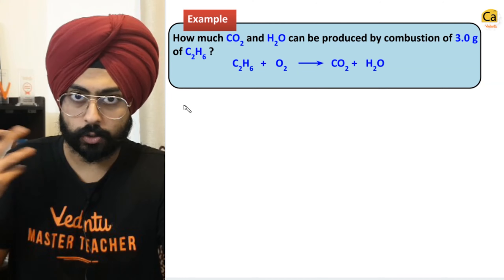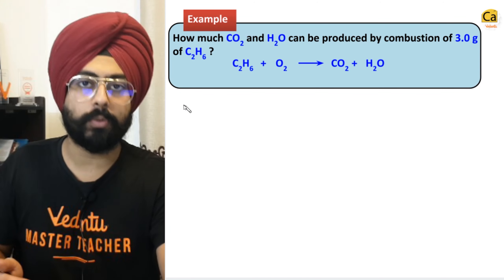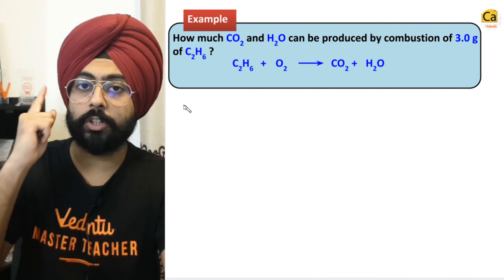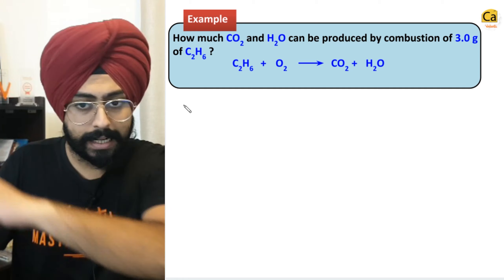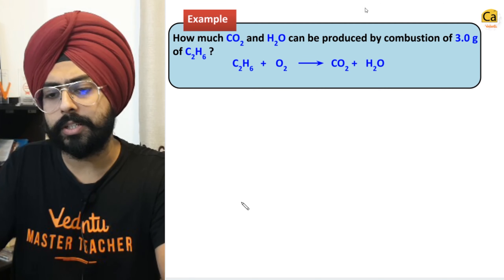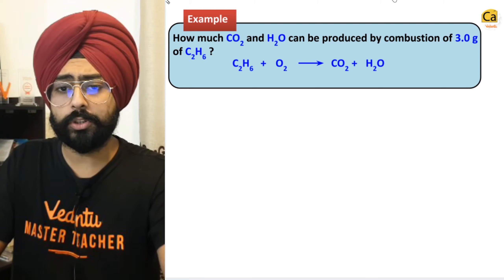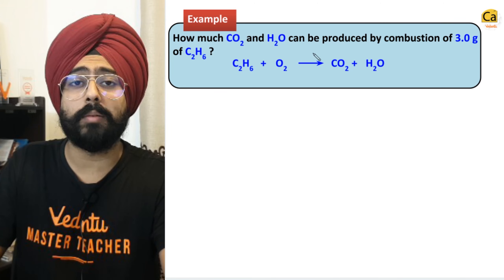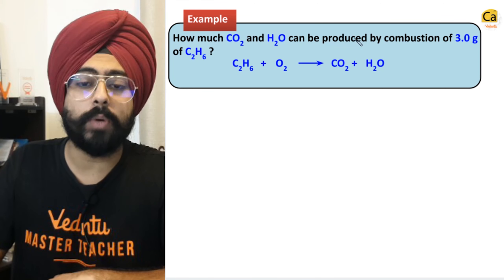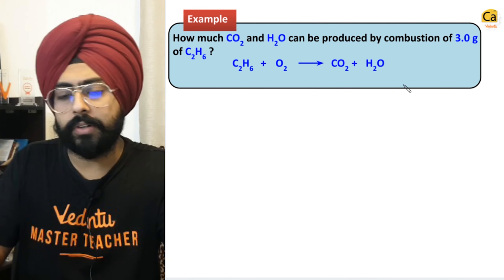By understanding these questions, we'll try to understand how to solve questions using the Principle of Atomic Conservation. Let's look at this first question — very simple. How much CO2 and H2O can be produced by combustion of 3 grams of C2H6?